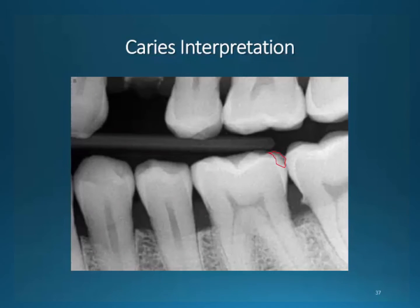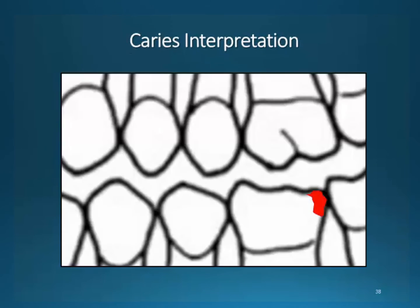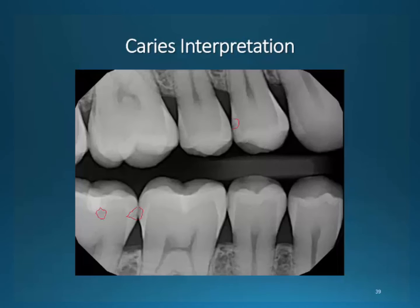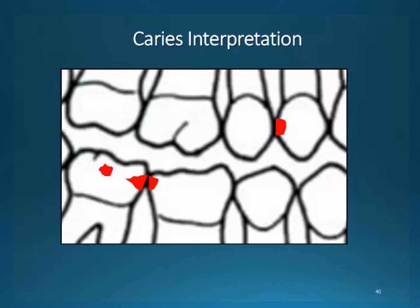We'll move into caries interpretation and documentation. All visible decay must be documented in the patient's chart. Let's practice how these lesions are drawn to accurately display their condition. Notice the outline in red on the distal edge of tooth number 19. If this area had to be drawn in the patient's chart, it would be drawn in this manner. Here are a few other examples: an area of occlusal decay, two areas of interproximal decay on the lower, and one area of decay on the maxilla.